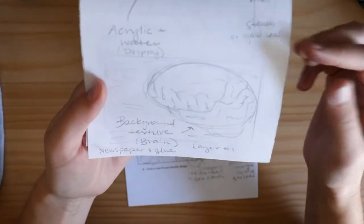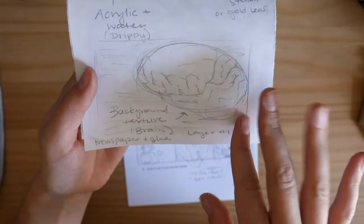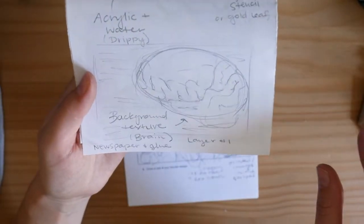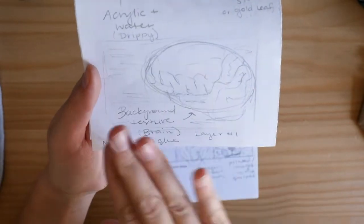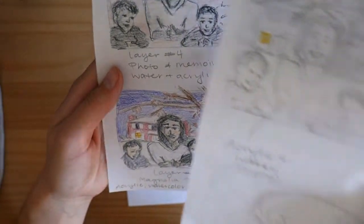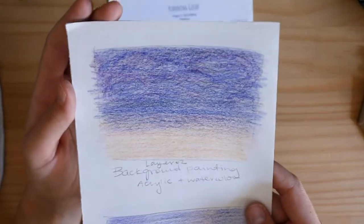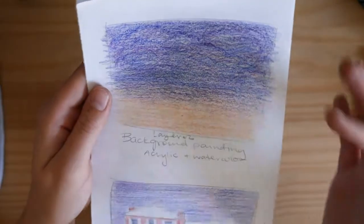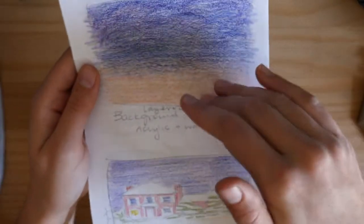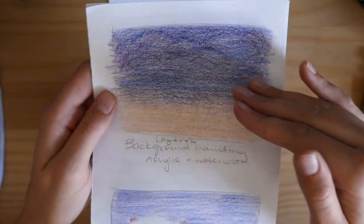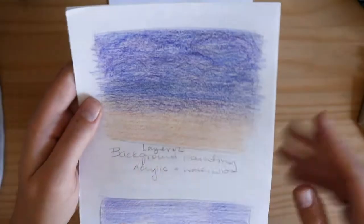I did a few sketches of each layer to help me plan what to do in what order. First, I'm going to add background texture — I'll try to make it slightly resemble a brain at the top and just streaky random texture elsewhere. I want it to be really subtle, and I'll use newspaper and glue for that. My second layer is going to be paint: I'll use acrylic first, with a dark rich color at the top fading to a lighter brighter color at the bottom, then go over it with some watercolor so it's not flat and has some cool texture.